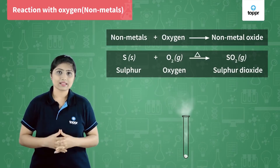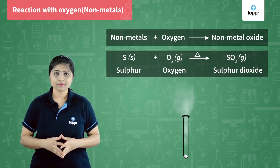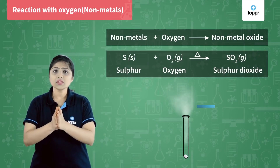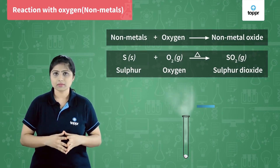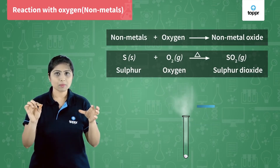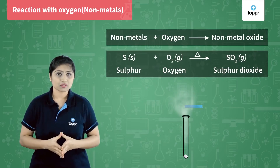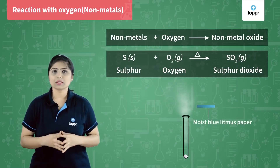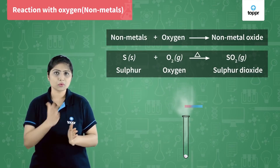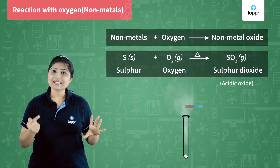Now let's test this gas to see whether it is acidic or basic. For that, we use a litmus paper — we're using dry blue litmus paper here. When dry blue litmus paper comes in contact with SO2, we will see no change. But if we take a moist blue litmus paper, we will see that it changes from blue to red. This indicates that sulfur dioxide gas is acidic.